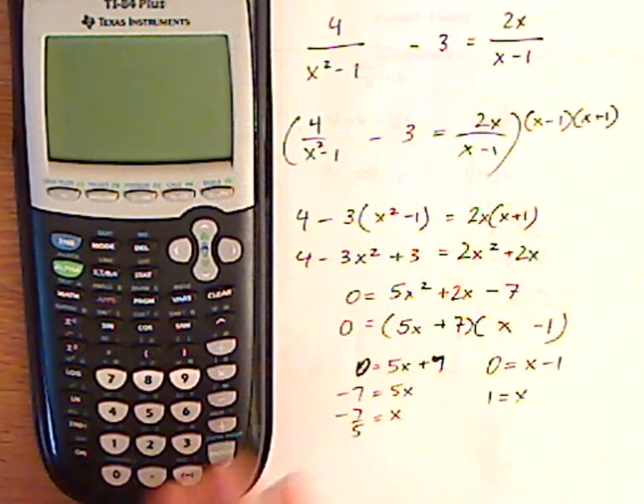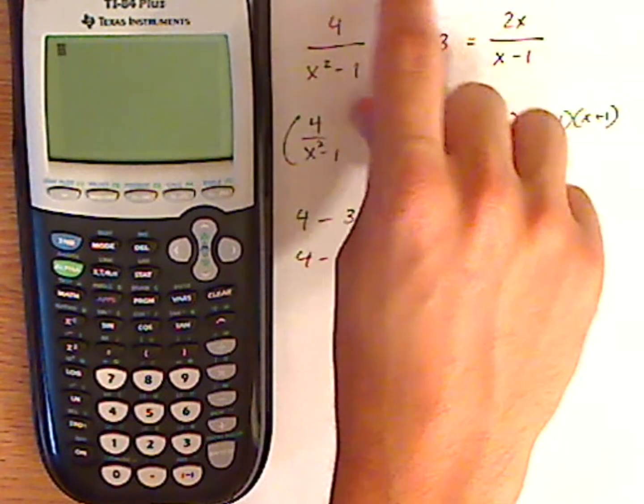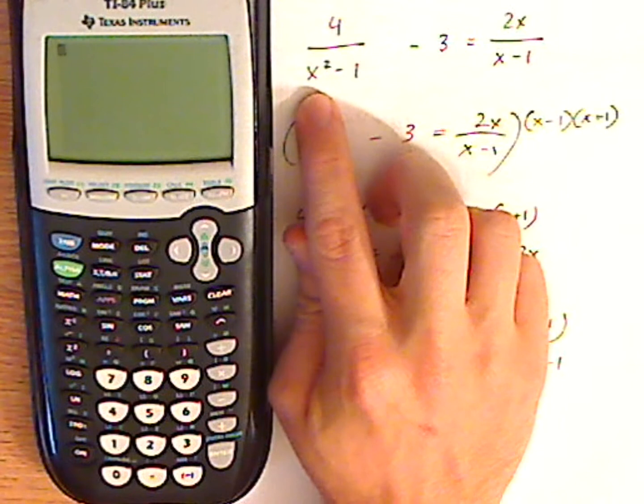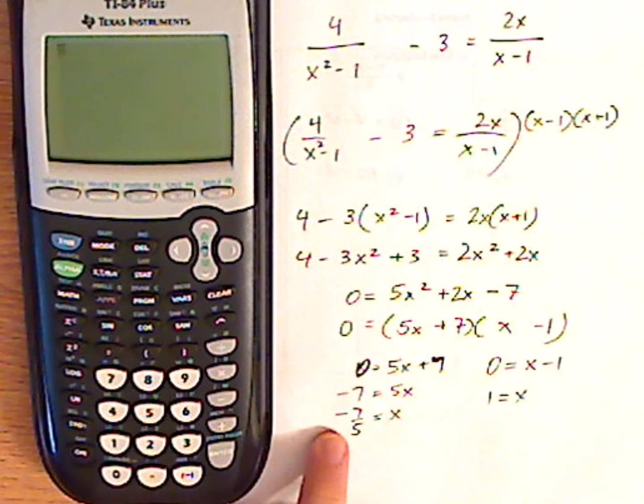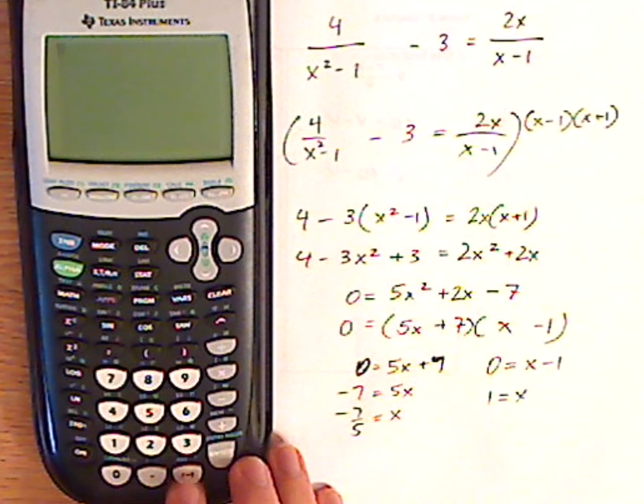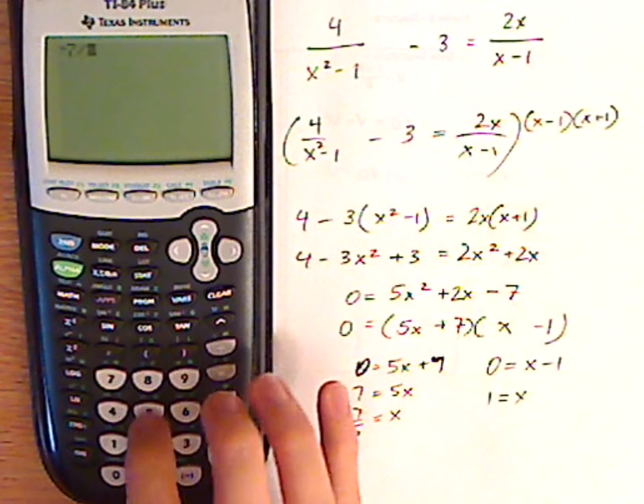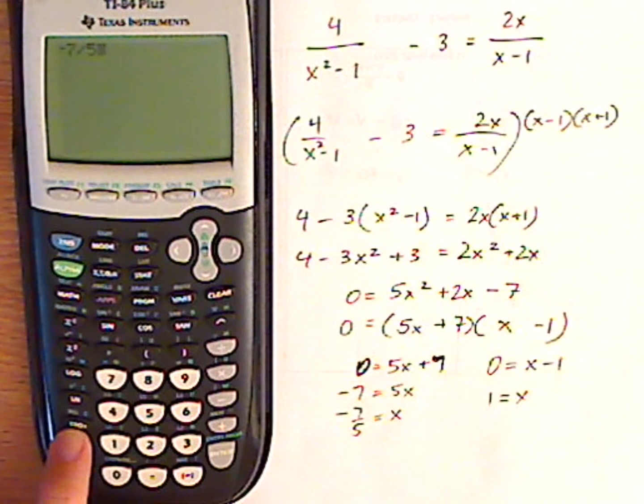So to check, what you want to do first is put a solution for x. When you're typing in negative seven-fifths, you want to push the negative button, don't push the minus button. So negative seven divided by five, and then I'm going to use the store button, which is right here.